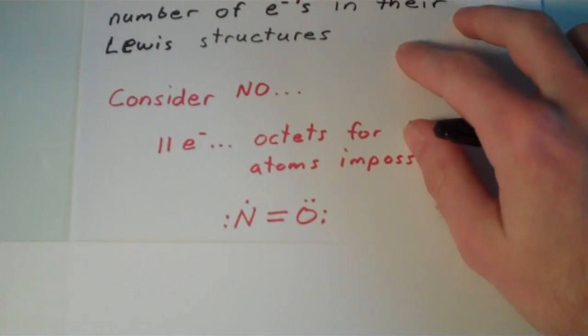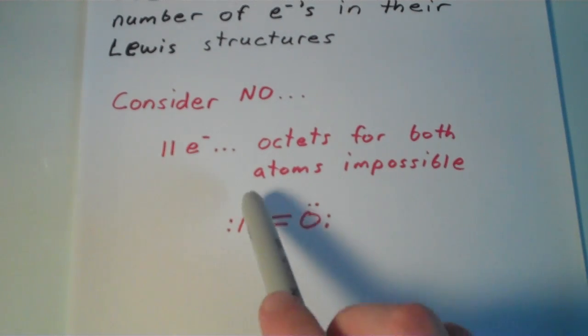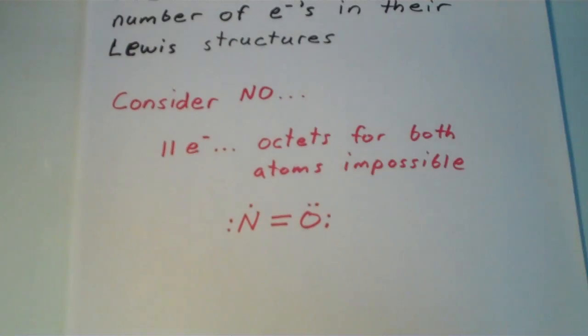If you attempt to draw the Lewis structure for nitrogen monoxide anyway, you'll end up with a structure that looks like this. Notice that there's simply no way to get around the odd electron. We have to put it somewhere, and on this structure, it's on the nitrogen.